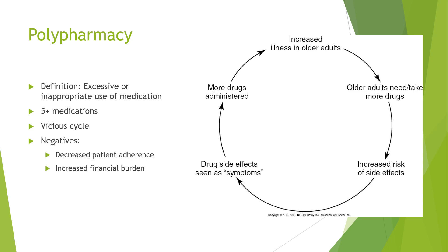Polypharmacy is defined as the excessive or inappropriate use of medication, specifically the use of five or more medications, and this becomes a vicious cycle. Thinking about patients you've seen in clinicals or even your grandparents — as they get older they start to get more illnesses or issues, and because of this physicians are prescribing them more drugs.